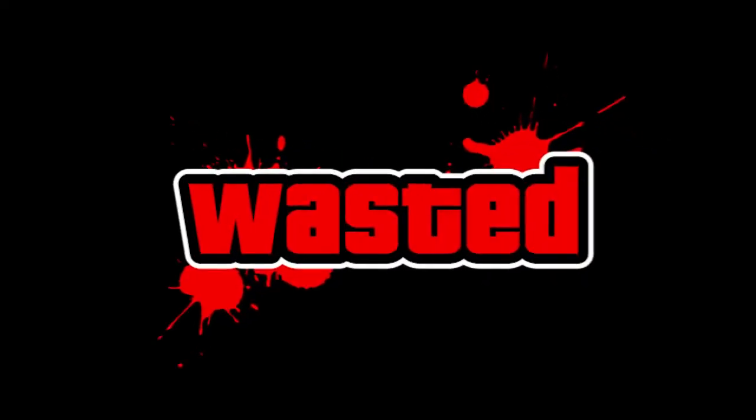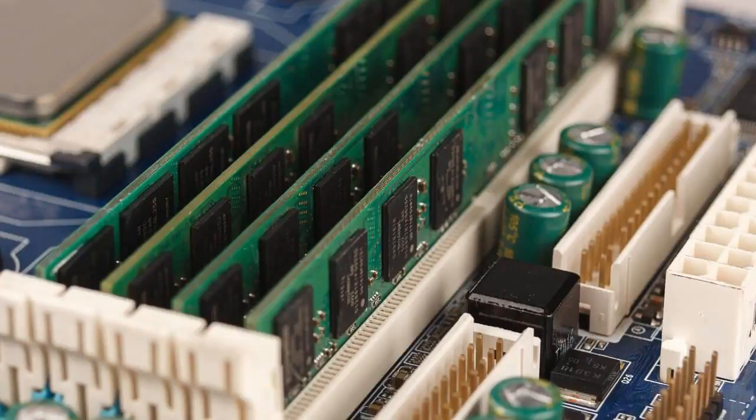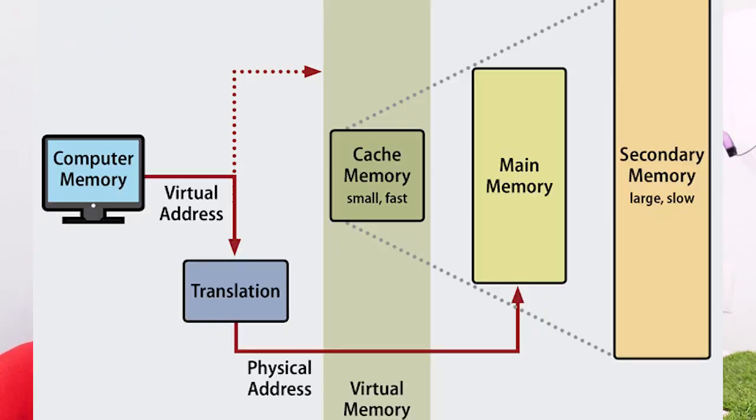RAM is a small storage component. If you have a phone or computer, RAM gives you fast read and write storage. When you have a processor, it will run faster because your application will be loaded into RAM.